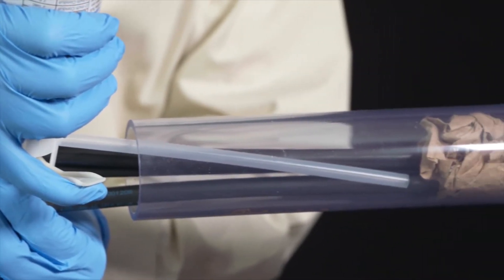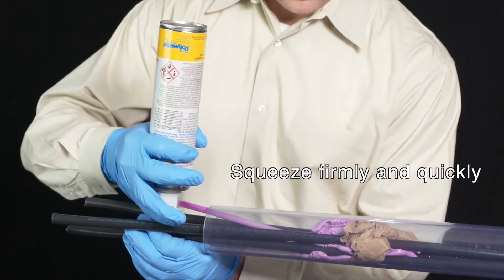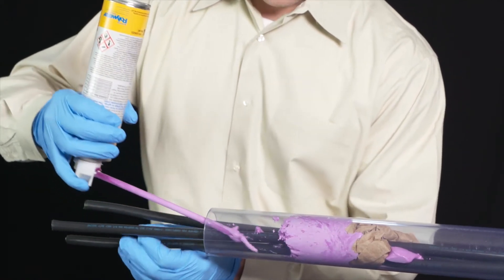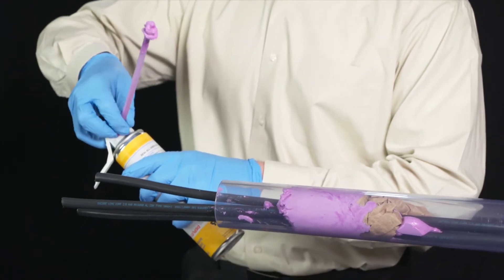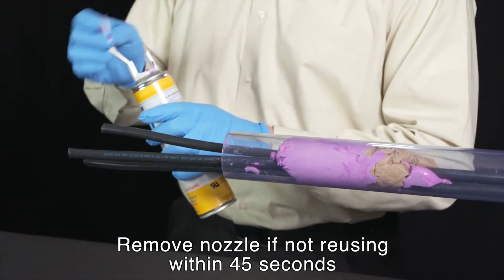Insert the nozzle all the way into the seal space. Squeeze the trigger firmly and quickly, making sure that it's fully depressed. When filling conduits, move the actuator nozzle to all areas of the conduit to ensure a complete seal. Make sure to spray between cables.